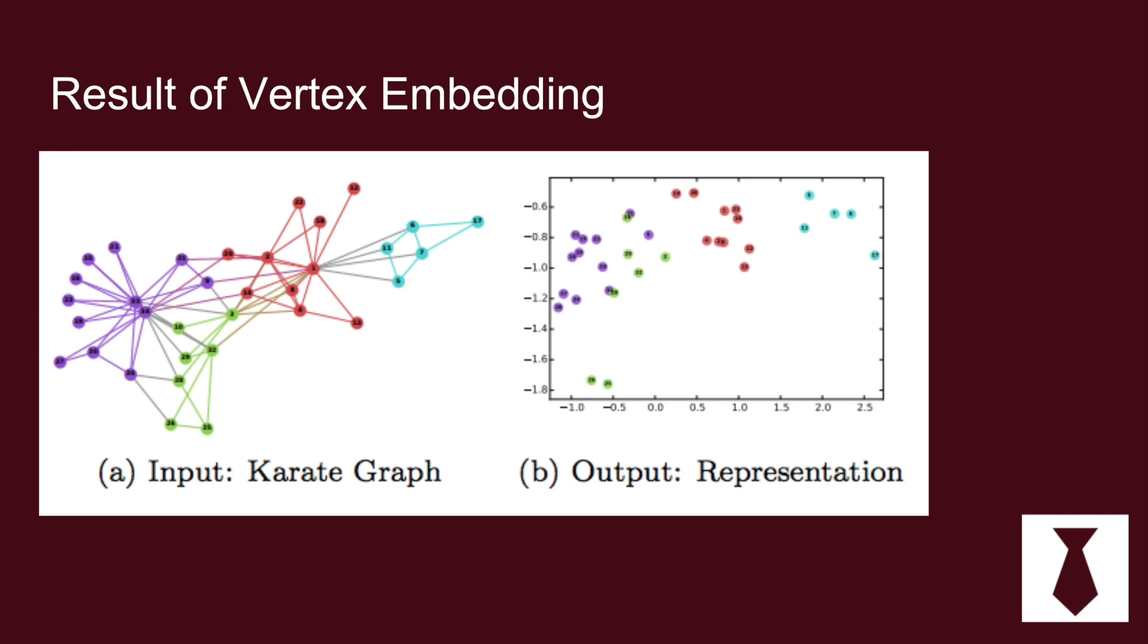So what they do is they take the graph on the left and they use deep walk and embed it into the plot on the right and the idea is that the plot on the right will preserve the shortest path distance between nodes on the left and then also hopefully it'll preserve the label. So similar to any machine learning model you label the vertices in the graph according to their communities and then you do some clustering and try to preserve these labels with the embedding.